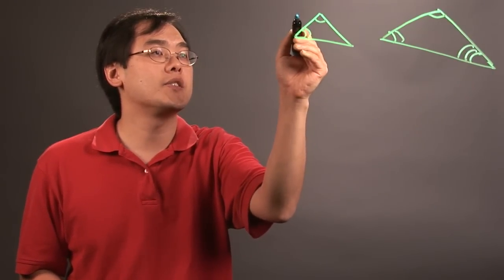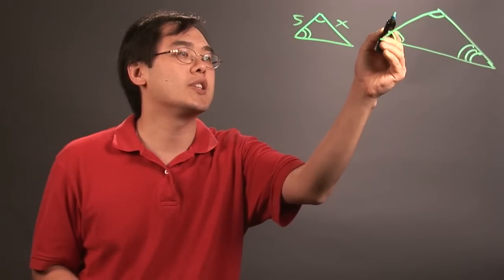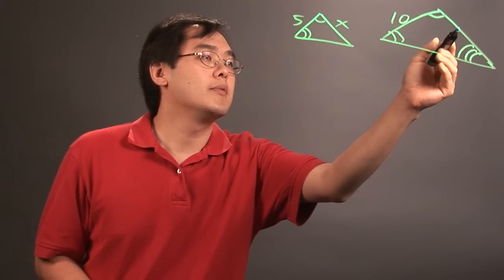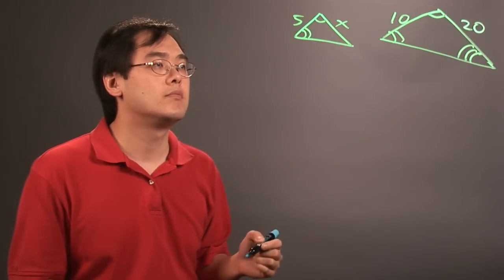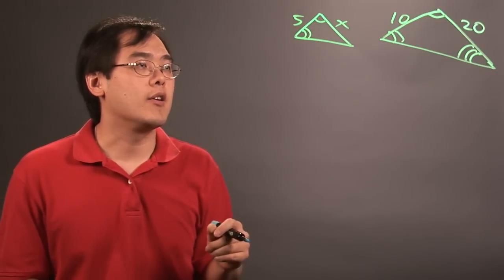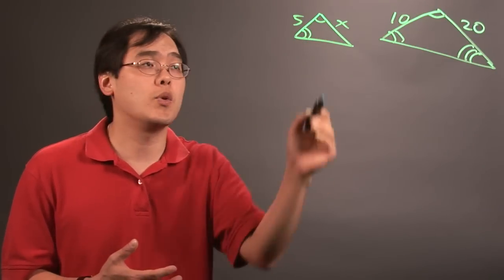And suppose you're given that this is 5, and that's going to be x, and this is going to be, let's just say, 10, and that'll be 20. Now, what you want to think about here is if you want to solve for x, you have to make a decision on if you want to compare,